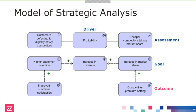We see the blue concepts that are already in the ArchiMate language, and then we see 'outcome' as a new concept added to ArchiMate. That's the result of having competitive premium setting and improved customer satisfaction. The symbol is really like a goal with a dart stuck in the bullseye — it's related to the goal concept. The goal is what you want to achieve; the outcome is what you get.